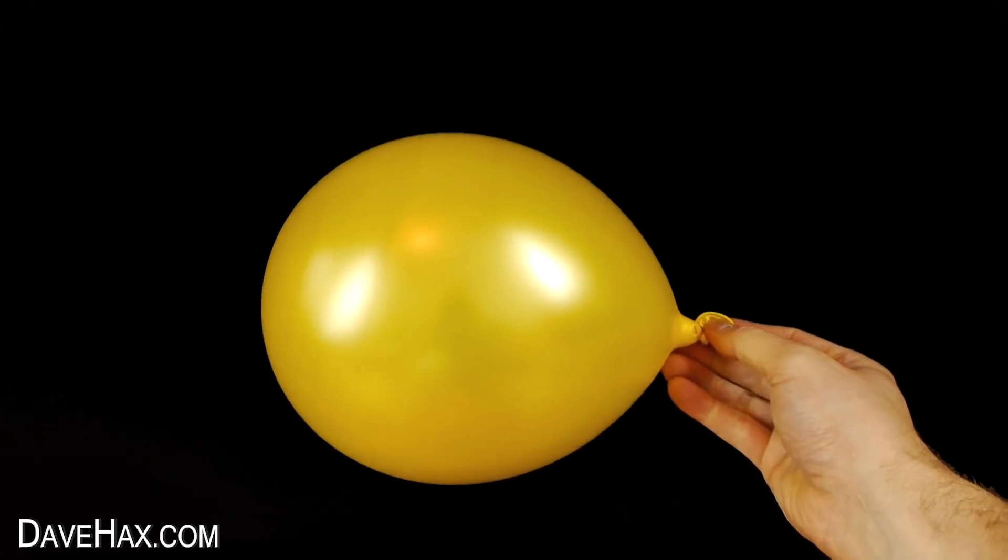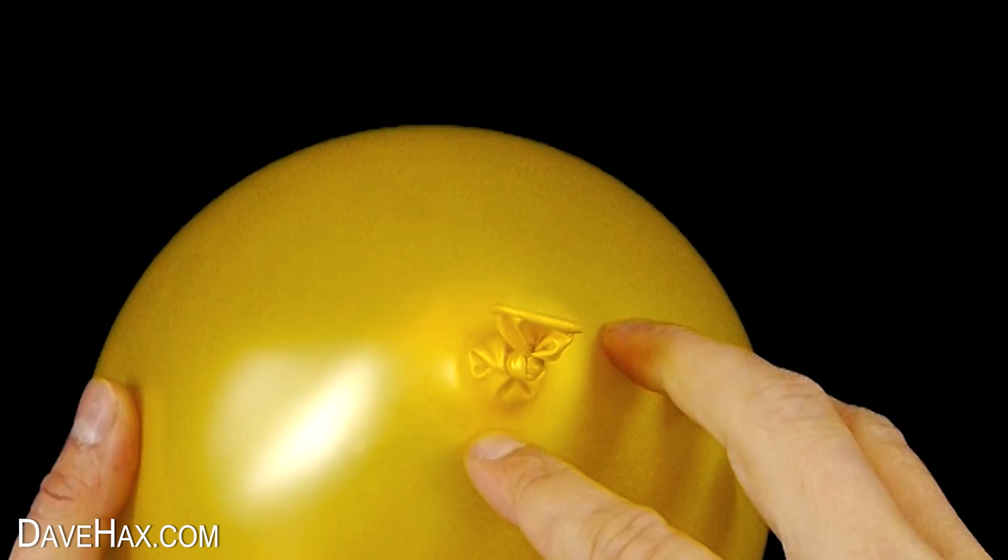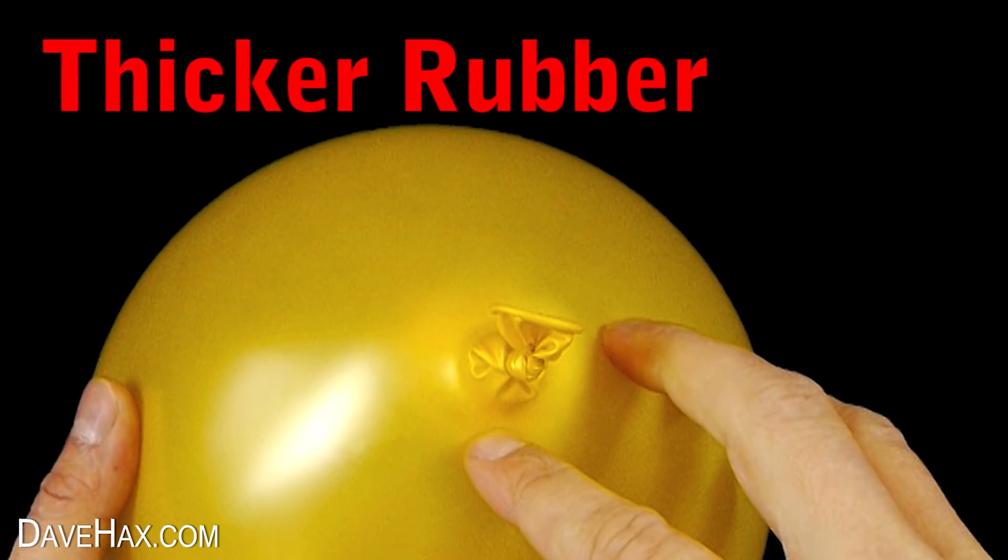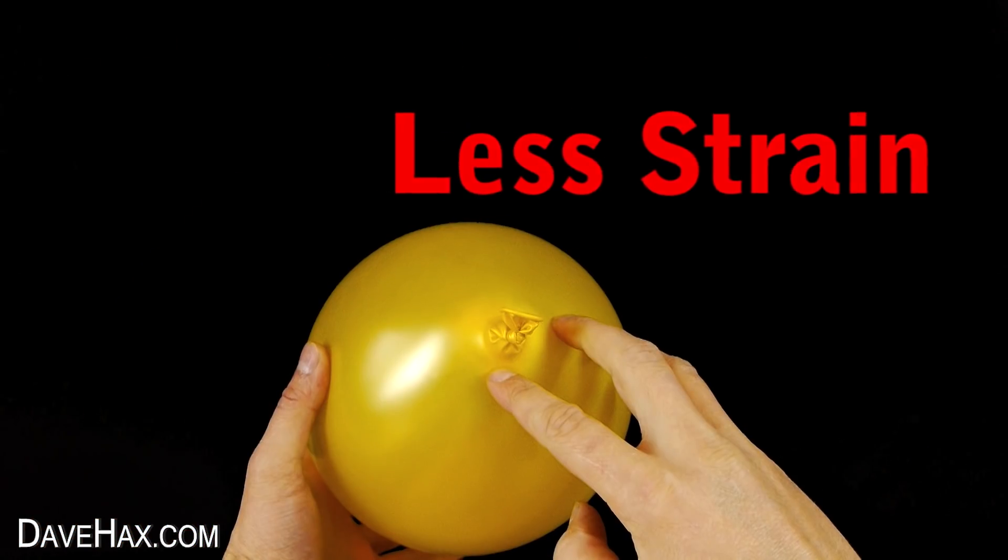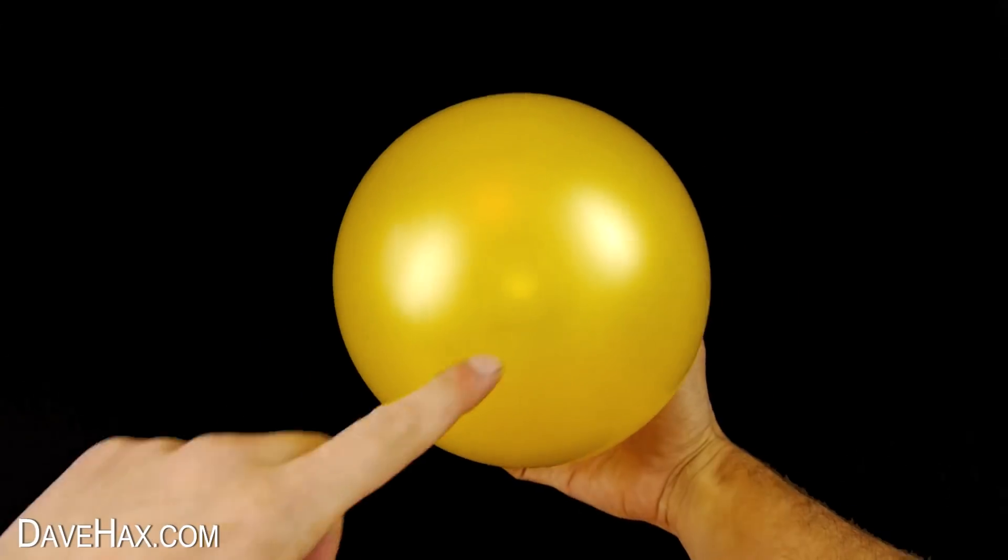If we look at the bottom here, you can see it's a deeper color yellow. This is because the rubber's thicker and not stretched out so much, so it's under less strain. Same goes for this point here, right at the top.